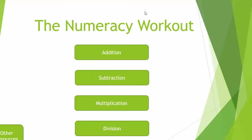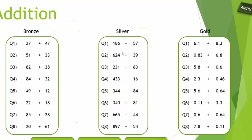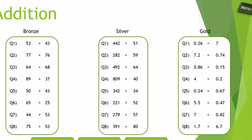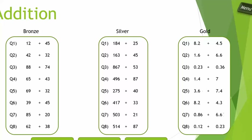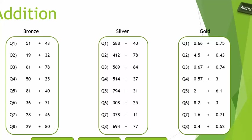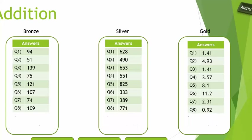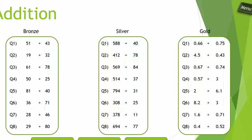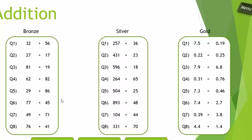So you've got addition, subtraction, multiplication and division. If I click on addition, you'll see you get three levels of questions: bronze, silver and gold. If you don't like those questions, there's a button just off screen that says 'New Questions' — click that and it'll generate new questions. And if you want to reveal the answers, the next button along says 'Show Answers'. Click that and there are the answers, and you can hide and show answers and generate new questions as needed.